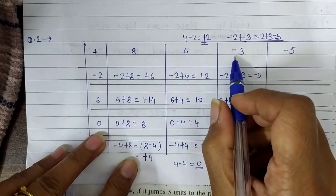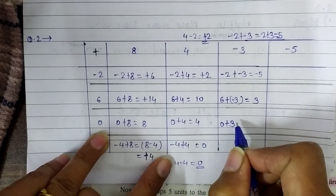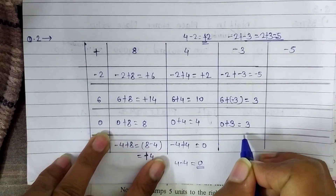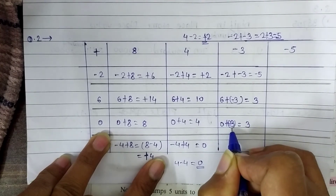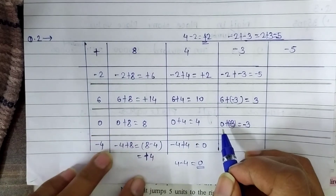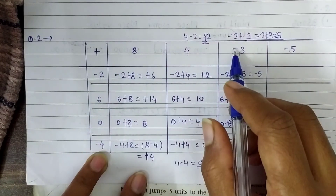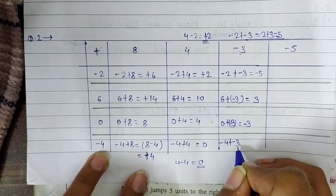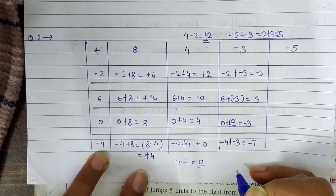Next, 0 plus (−3): when we add 0 to any number, the answer is that number. So the answer is −3, because 3 has a minus sign. Then (−4) plus (−3): both have the same sign, so ignore the signs and add: 4 plus 3 equals 7. Put the common minus sign, giving −7.